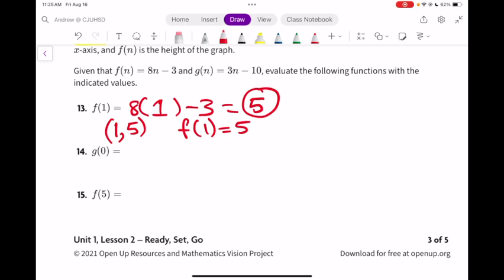Now let's look at g. g has the function rule 3 times a number minus 10, but the number is 0. So we're going to substitute 0 in here. 3 times 0 minus 10 is minus 10. That would represent the point (0, -10).